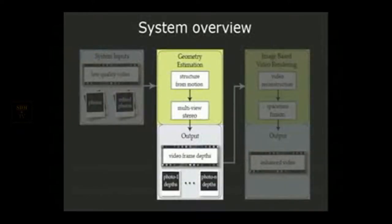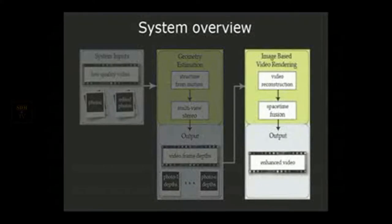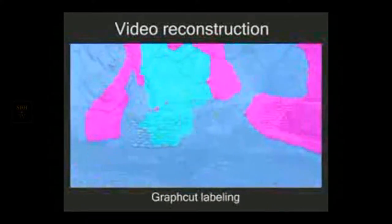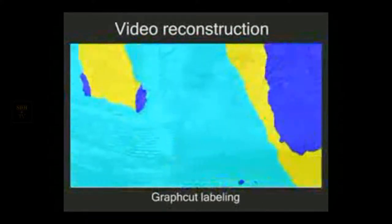In the next step of our system for rendering image-based video, we use the depths estimated in the previous phase to warp the photographs into the viewpoints of the video frames. The input video is reconstructed from patches of the warped photographs using a graph cut algorithm. Here we show the graph cut labeling with each photograph represented by a different color.